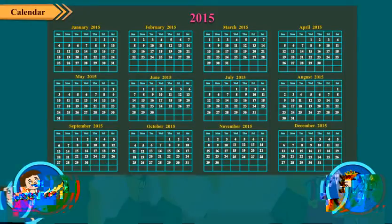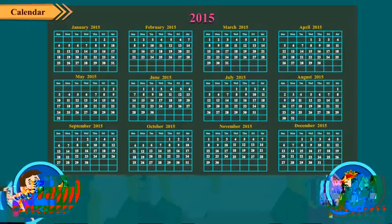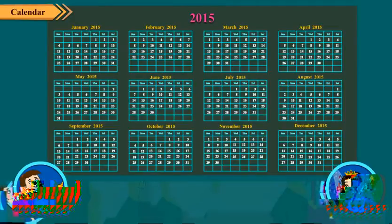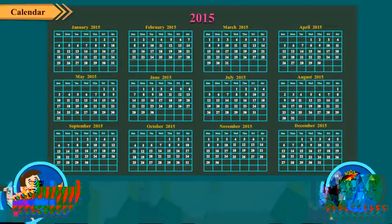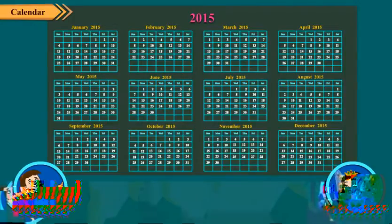Now, tell me something about a calendar. A calendar is a chart showing the days, weeks and months of a year. Here is the calendar for the year 2013. All the Sundays have been shown in red, which means you do not have to go to school on those days.